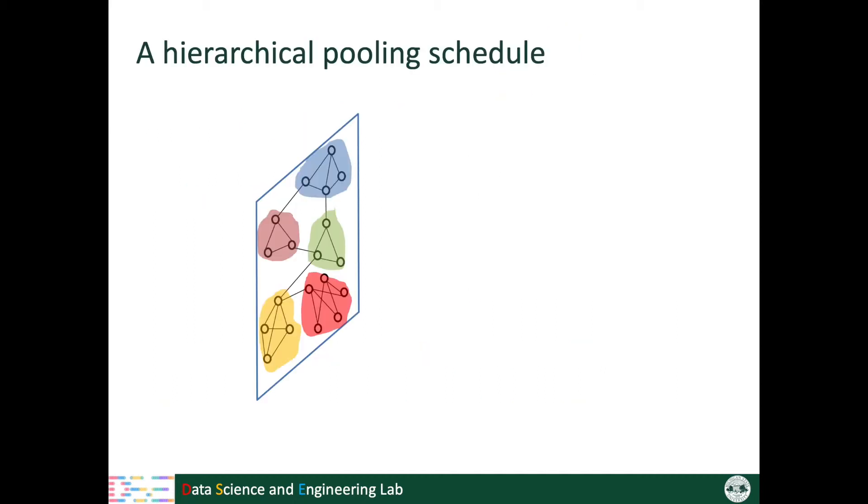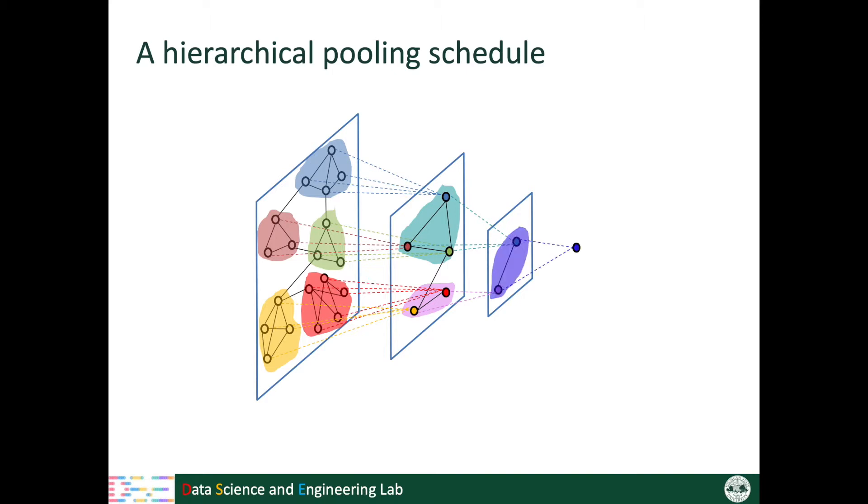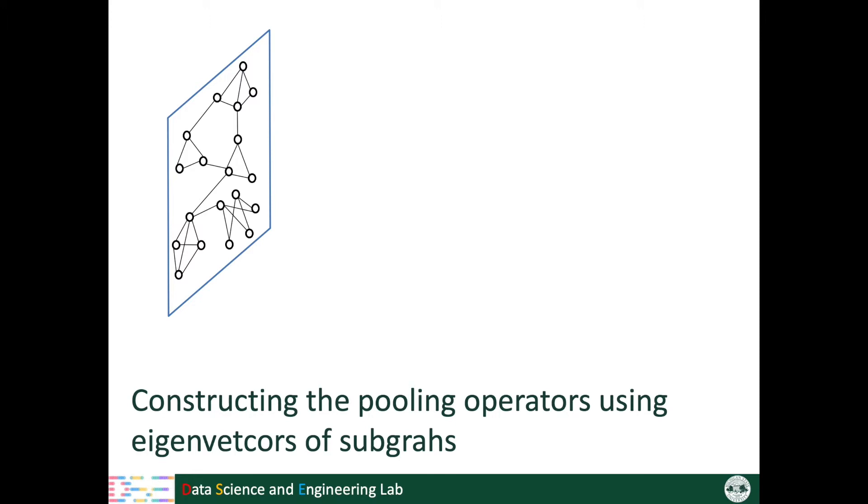In this work, we propose a hierarchical pooling schedule which can largely preserve the feature information while utilizing the graph structure. We partition a graph into several subgraphs and then construct the pooling operators using the top eigenvectors of each subgraph.